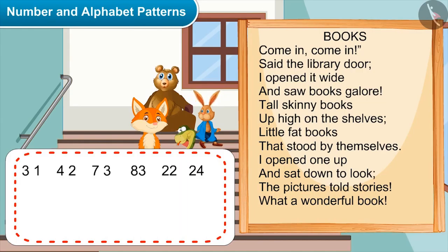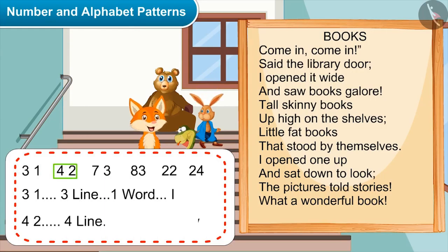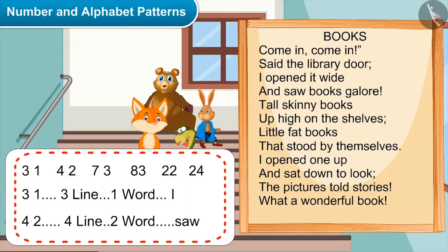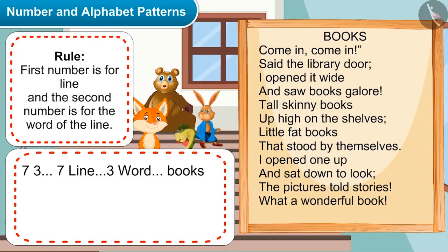Okay, listen carefully. First, 3,1 means third line, first word. So next 4,2 will mean fourth line, second word. The rule is: the first number is for the line and the second number is for the word of that line. So 7,3 means seventh line, third word.